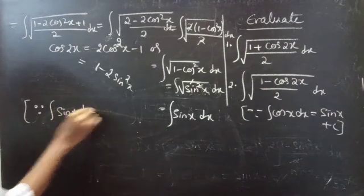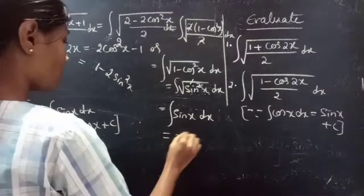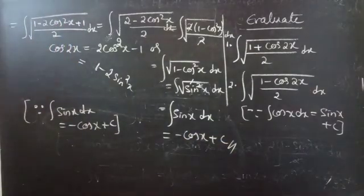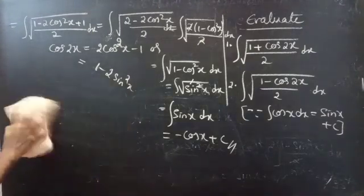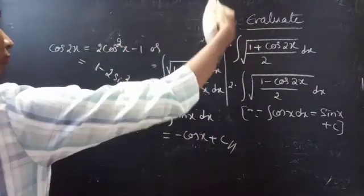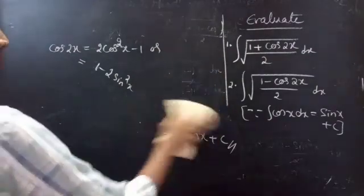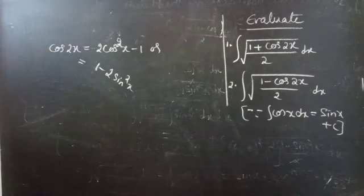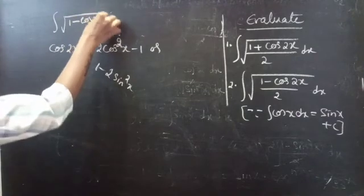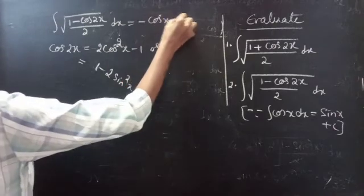The square and square root cancel, so this equals the integral of sin x, which equals minus cos x plus c. Therefore, the integral of square root of (1 minus cos 2x) divided by 2, dx equals minus cos x plus c.